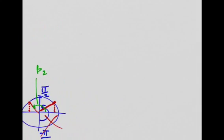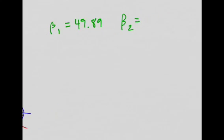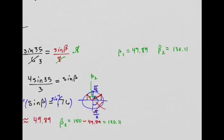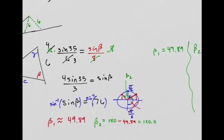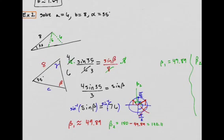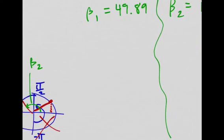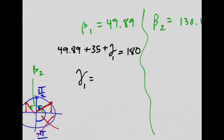So I'm going to take this over here. So beta 1 was 49.89. Beta 2 was 130.11. And I'm just going to set up two separate cases. So what do I need? I already have A, I already have B, I need C, and I need gamma. So I'll do that with my beta 1 case. So with beta 1, all the angles have to add up to, is it 35? Yeah.